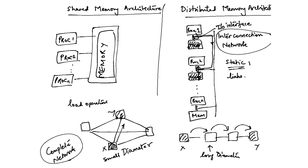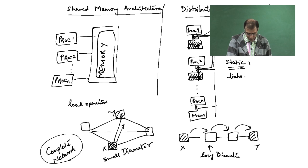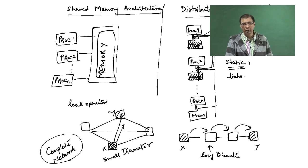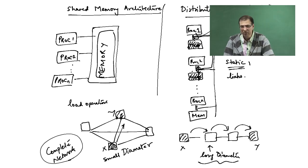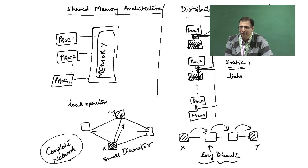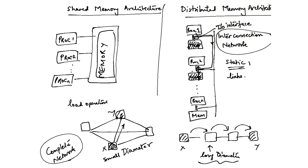But which one is more scalable if I want to scale up to 1000 processors? The complete network becomes impractical — if you want to build a complete network over 10,000 or 100,000 nodes, it is a nightmare; you cannot do it. Whereas a path is easy to build, but it is not a great idea either, because just imagine the first node wanting to talk to the last node — it would take 100,000 hops for that message to traverse. So what are some of the more practical networks?